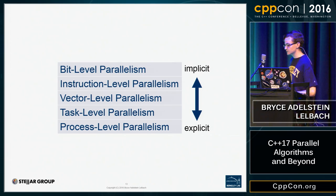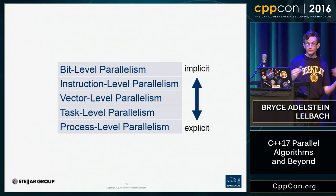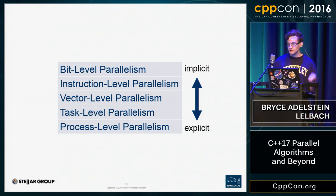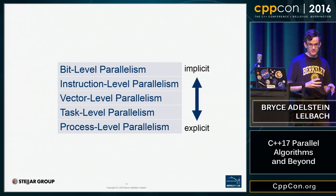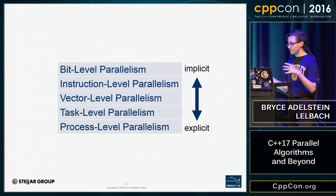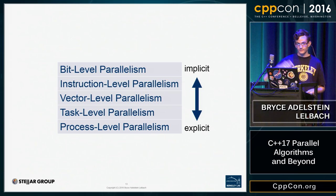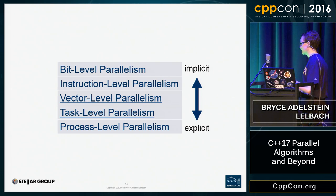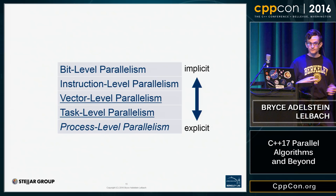Then there's task-level parallelism, which is exposed through simultaneous execution of tasks that communicate and share a primary address space. Finally, there's process-level parallelism, exposed through simultaneous execution of different processes which communicate via messages or shared memory regions and don't have a shared address space. At the bottom these are very explicit; at the top very implicit. The parallel algorithms library today provides vector and task-level parallelism. In the future it might provide process-level parallelism like distributed computing support.